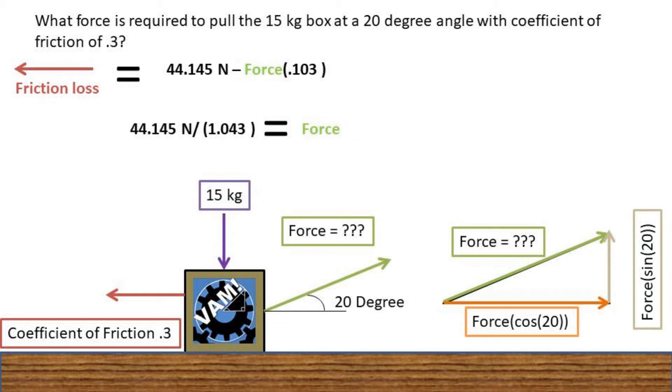To finish off this calculation, we must divide by 1.043. We get our final answer at 42.325 newtons, or greater, of force needed to pull the rope to get the box to move. You can check your work by plugging your answer into your previous calculations.